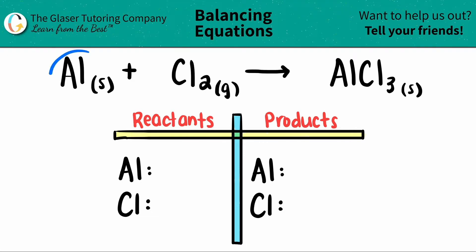Today, we're going to balance the equation of aluminum solid, Al, plus chlorine gas, Cl2, and when they come together, we're going to produce aluminum chloride, which is AlCl3.